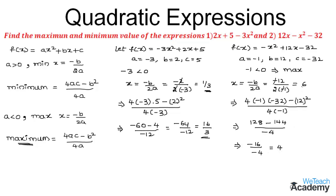So we can see that the function f is maximum at 6 and its maximum value is 4. This is how we solve examples under maximum and minimum values of quadratic expressions. For more videos, visit our website Vtish Academy. Thanks for watching. Have a nice day.